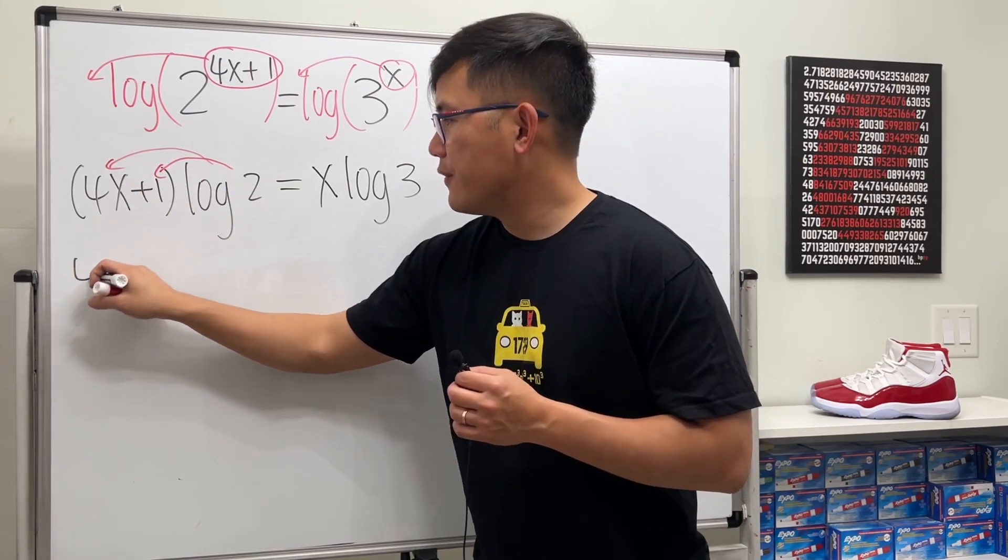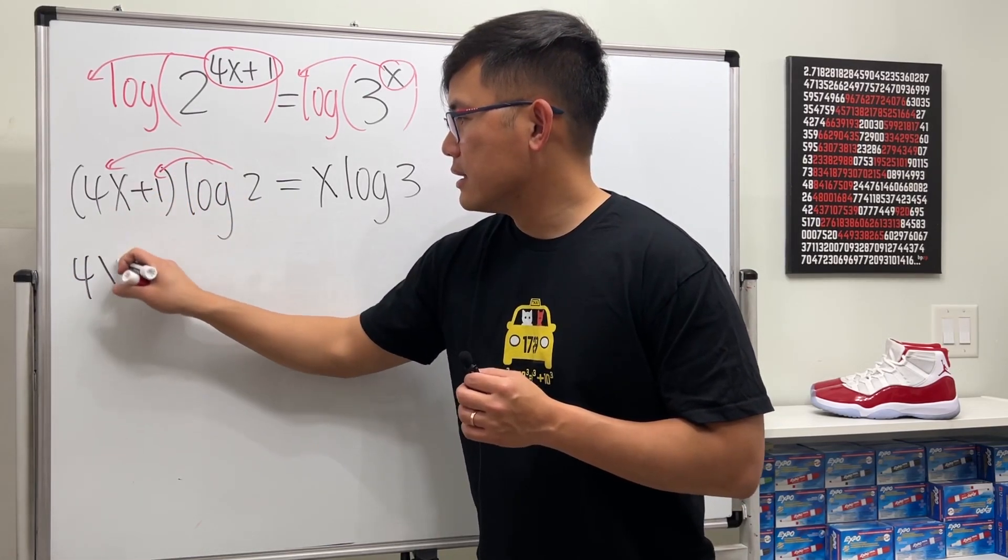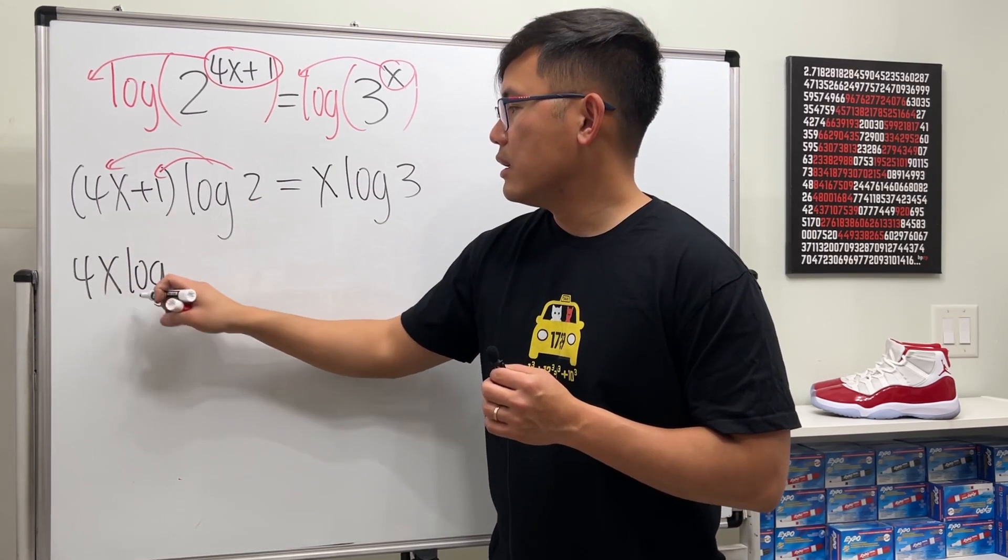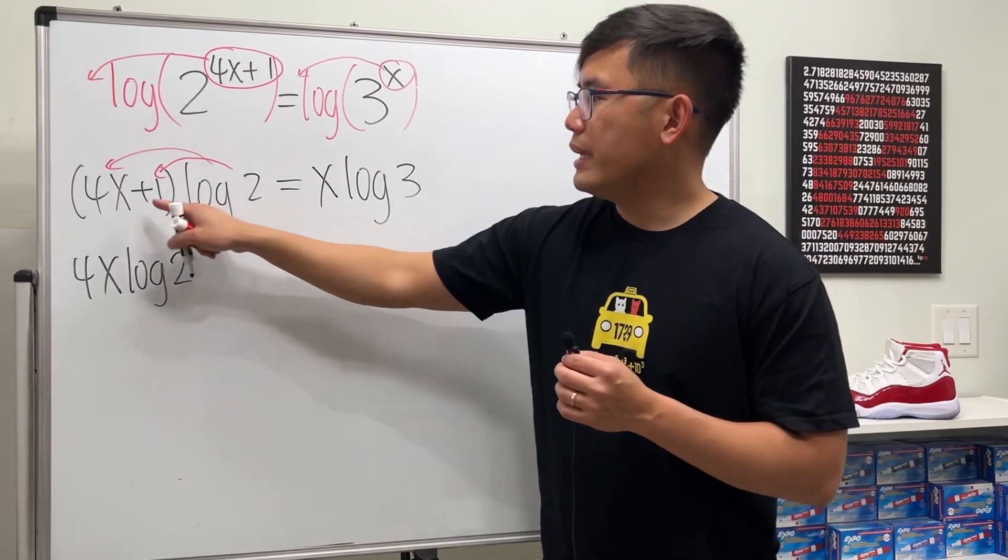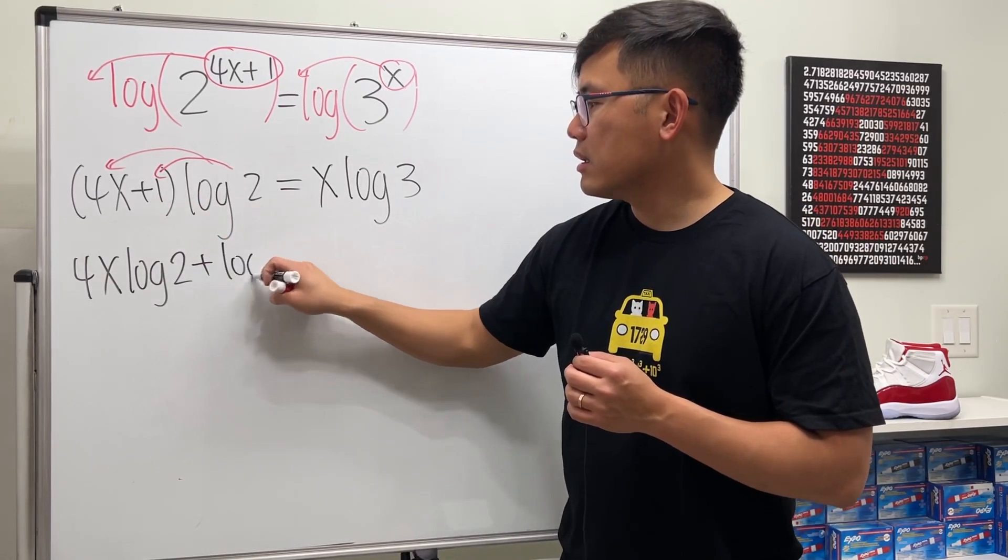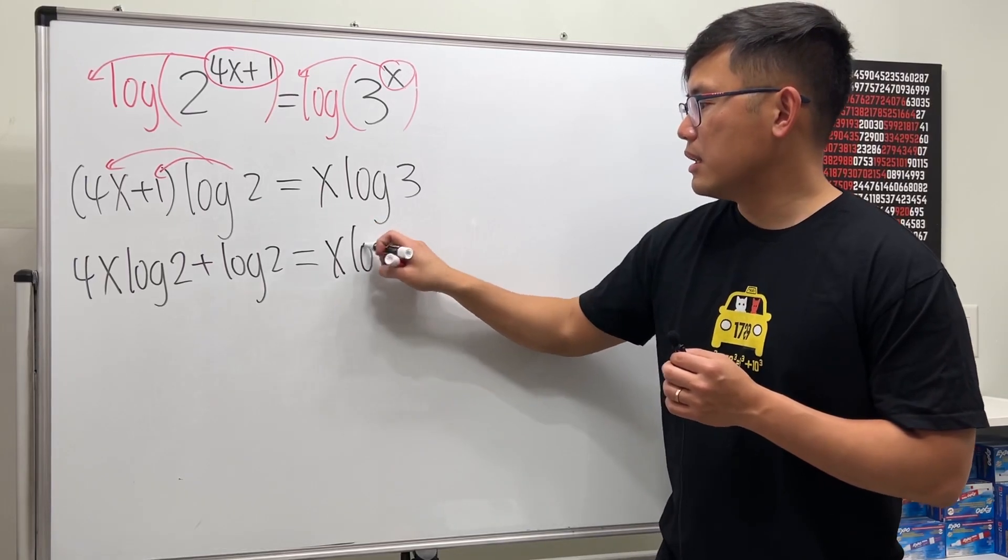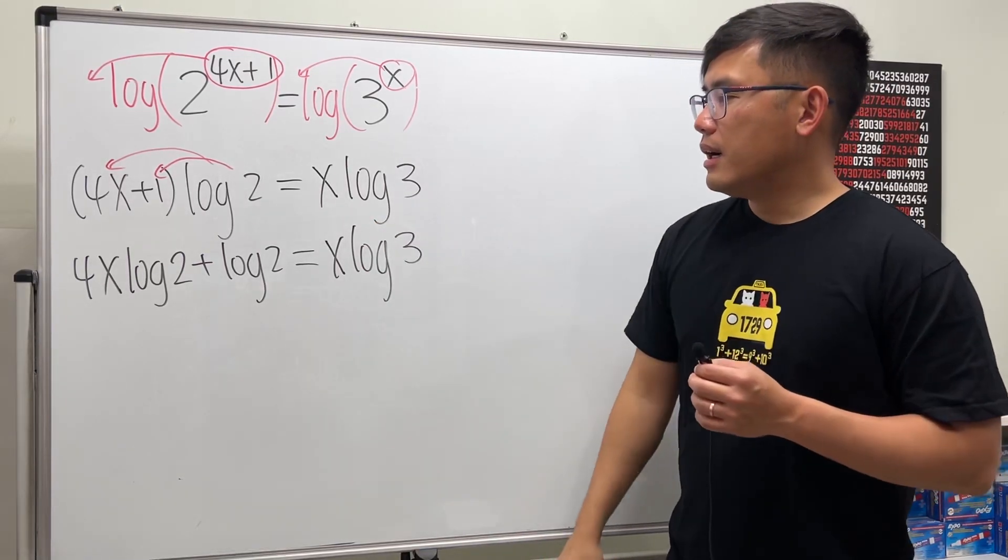So we get 4x. This is a number. x is right here. And then we also have the log of 2. And then we add log of 2. And that's equal to this right here. It's just x times log of 3.